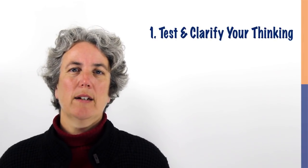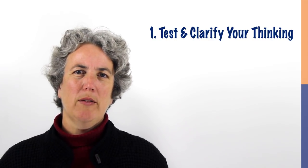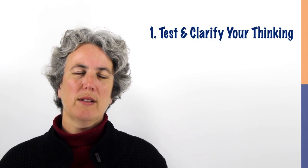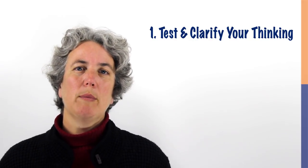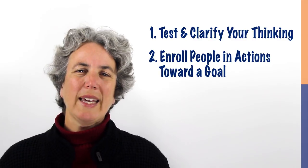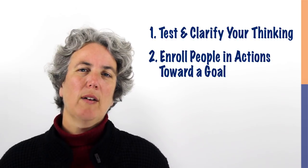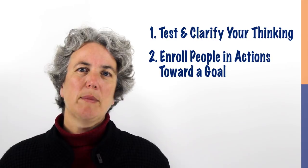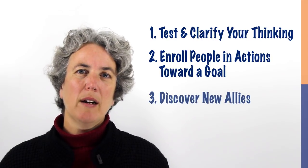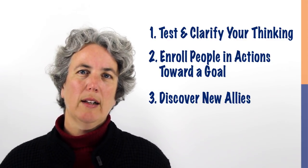First, they can help you test and clarify your thinking — what is it about the interconnections of this system that give rise to its behaviors, and how could different interconnections give rise to different behaviors? Second, causal diagrams can help you enroll people in action toward a goal: why can't we wait and see on climate change, why should we do this action and not that action? And third, causal diagrams can help you find allies, sometimes in unexpected places, because they help you see the other parts of the system that share some of your goals.